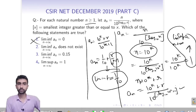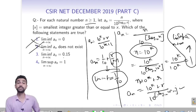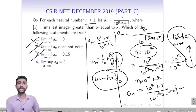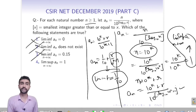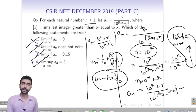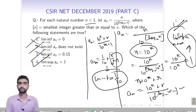Checking the options: lim inf equals 0 — incorrect. Lim inf does not exist — also incorrect. Lim inf equals 0.15 — also incorrect. Since all three options are discarded by the example, option 4 is correct, which is also consistent with the solution giving lim inf equals 1/10.